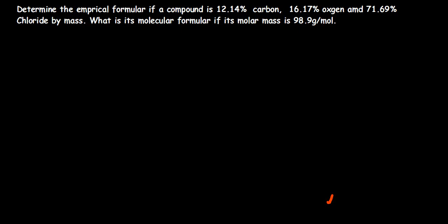Let's look at this question. Here they are saying: determine the empirical formula if a compound is 12.14% carbon, 16.17% oxygen, and 71.69% chlorine by mass.